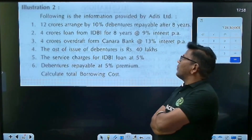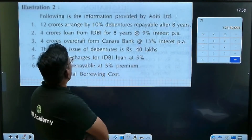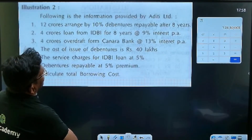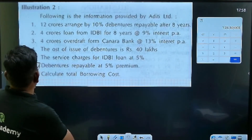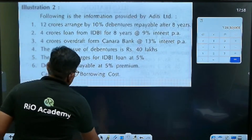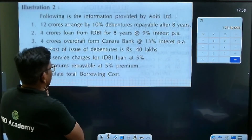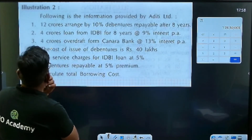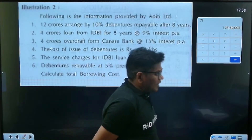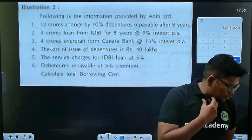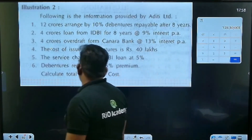4 crore from IDBI for 8% — this is the cost of capital. 4 crore loan from IDBI for 8 years at 9% interest rate. The cost of issue of debenture is 40 lakh rupees. Service charge add-on — debenture is repayable at 5% premium. That is also a cost. So how do we calculate the total cost of borrowing?